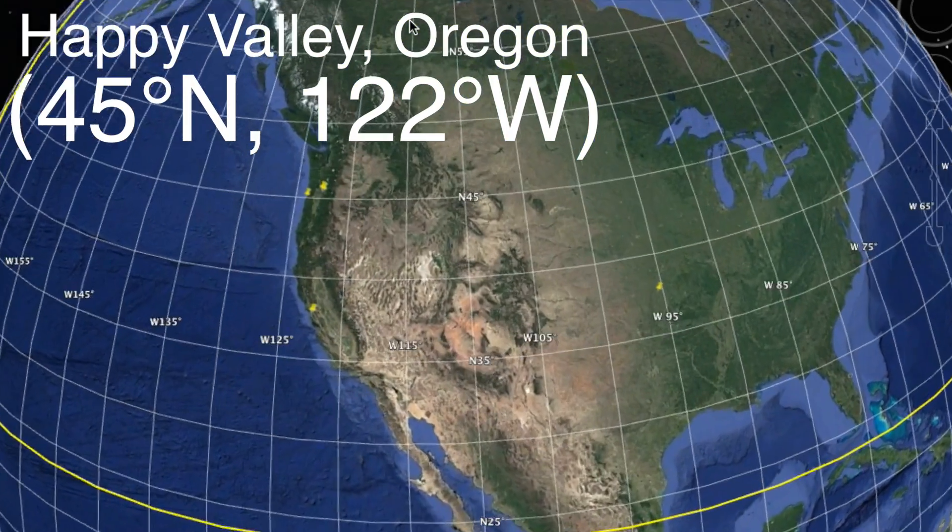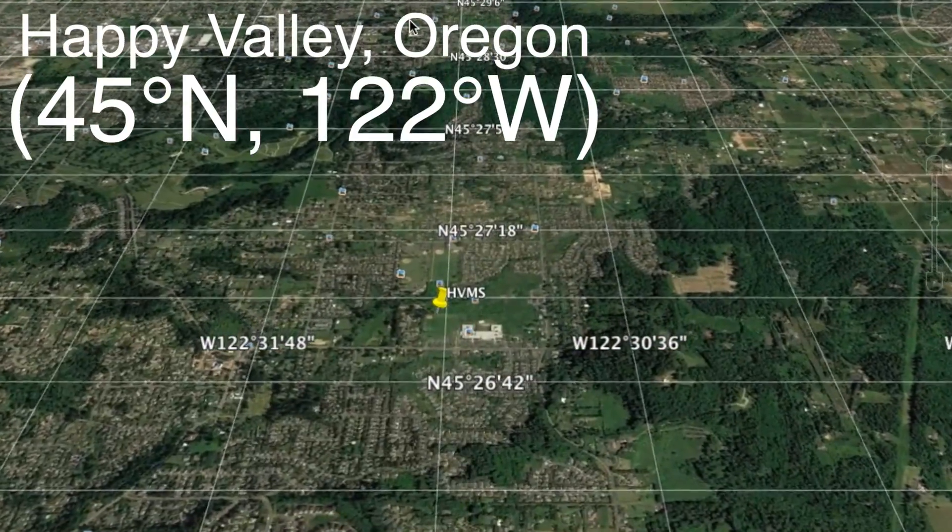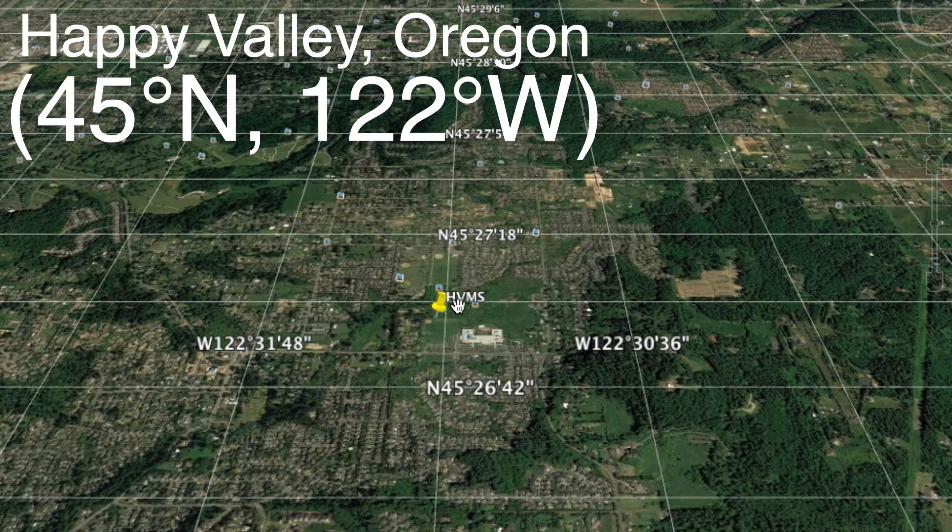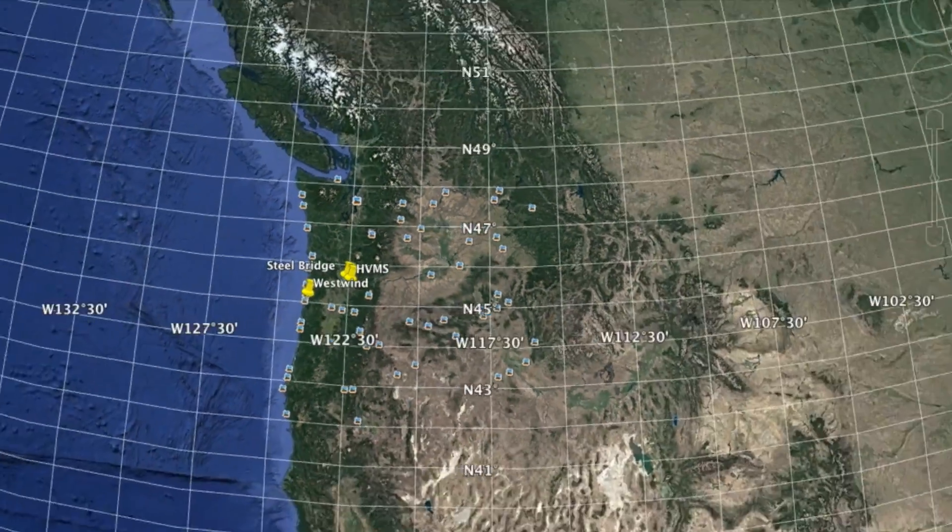Now we're going to zoom in to Happy Valley to find our school. You'll notice that we are 45 degrees north of the equator and 122 degrees west of the Prime Meridian. That's how you use longitude and latitude to determine your absolute location or geographic address.